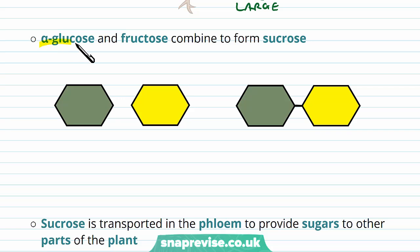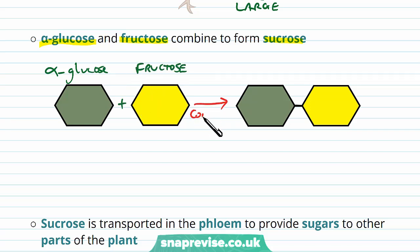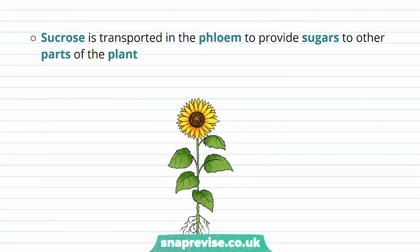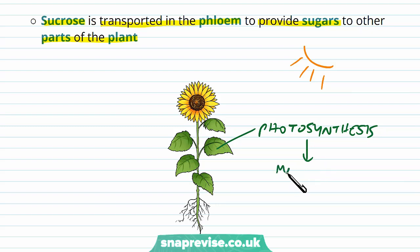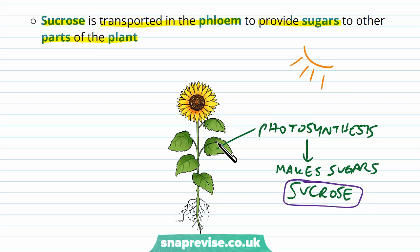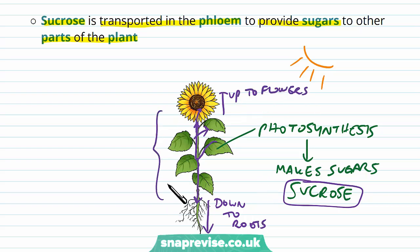Another type of disaccharide is made up of alpha glucose and the monosaccharide fructose. When these two come together in a condensation reaction, the disaccharide formed is sucrose. Sucrose is a disaccharide found in plants and is transported in the phloem tissue to provide sugars to other parts of the plant. When a plant carries out photosynthesis, it uses sunlight to produce sugars in the leaf, stores them as sucrose, and transports it up to flowers and down to the roots as an energy source.